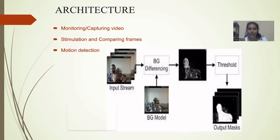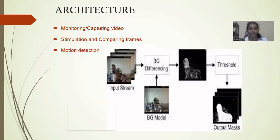In background differencing, the background and foreground are separated from each other to clearly show the difference between them. Grayscale is used to decrease the number of intensity channels to simplify frame analysis. The delta frame differentiates the intensities, and the threshold step produces two pixel classes shown in black and white.